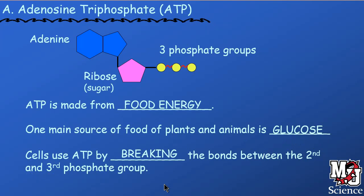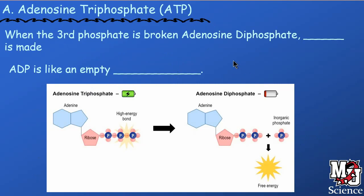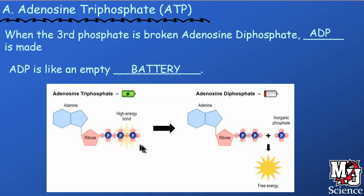Cells use ATP by breaking the bonds between the second and third phosphate group — that break right there causes the energy to be released. When that third phosphate group is broken off, you go from adenosine triphosphate to adenosine diphosphate, labeled as ADP. With three phosphates you have a tremendous amount of energy stored up, but once that third phosphate is broken off — going from three to two phosphates — you have a massive release of energy.